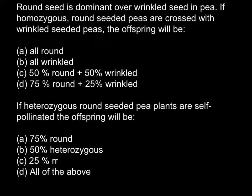First question: round seed is dominant over the wrinkled seed in peas. If homozygous round-seeded peas are crossed with wrinkled-seeded peas, the offspring would be?